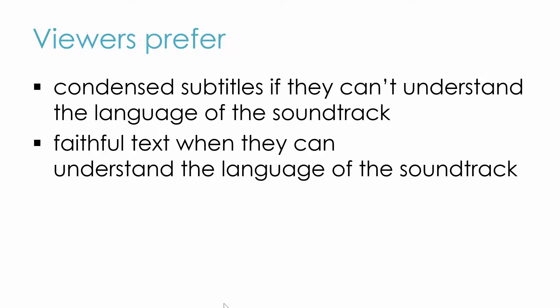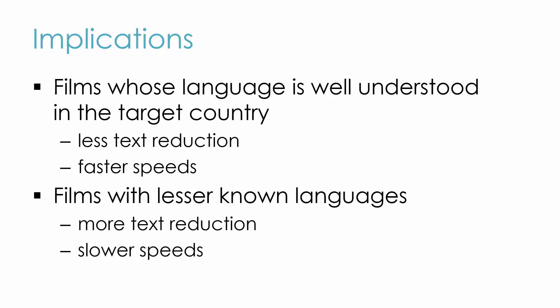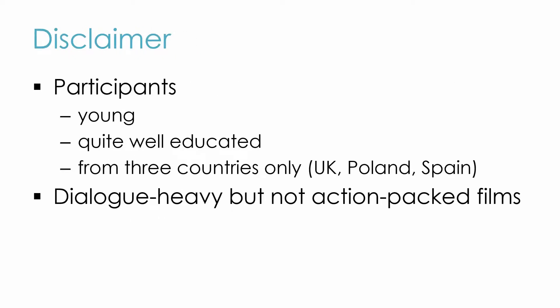Viewers stated they preferred condensed text in subtitles when they didn't understand the language of the film's soundtrack, but they wanted to have more verbatim and less condensed text in English clips where they could understand what the characters were saying. All this raises interesting questions on the degree of condensation in subtitling. Possible implications are that with films whose language is well understood in the target country, subtitles could contain more text and be displayed at faster speeds, but in the case of films with lesser known languages, more text reduction and slower speeds may be necessary.